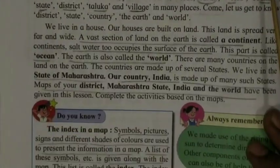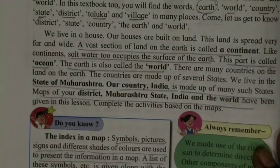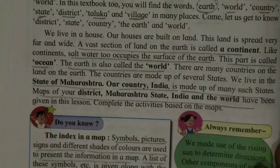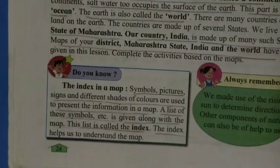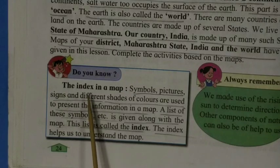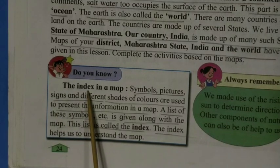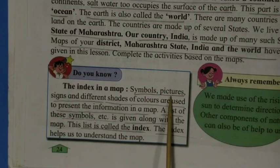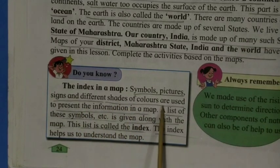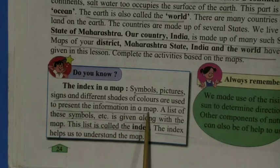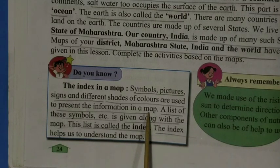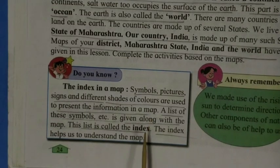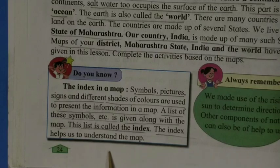Our state name is Maharashtra and our country name is India. Whenever a map is given, an index will also be given. Index means symbols, pictures, signs, and different shades of colors are used to present information in a map. Index helps us to understand the map — if you study the index carefully, you can understand the map well.